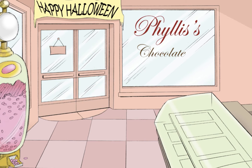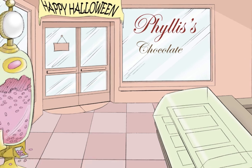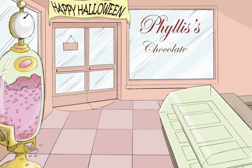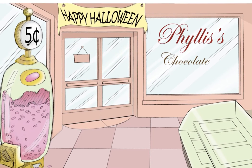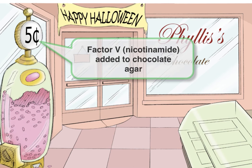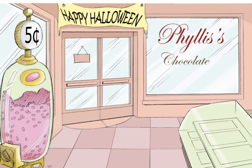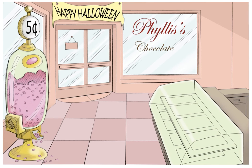To illustrate factor 5, we're going to turn the circle above the candy machine into a nickel. A nickel is worth five cents for factor 5, and the name nickel will help you remember nicotinamide — nicotinamide adenine dinucleotide, or NAD — so you can make the connection that factor 5 is NAD.